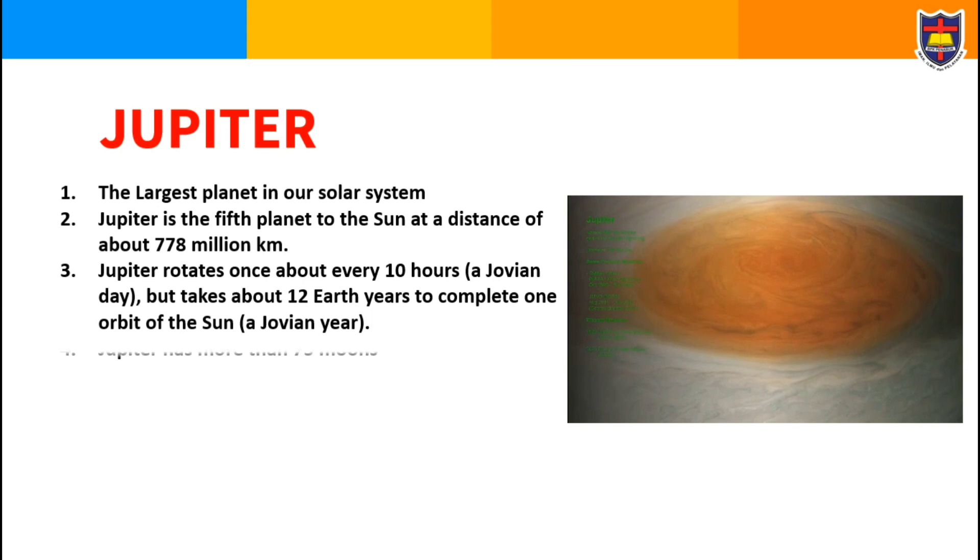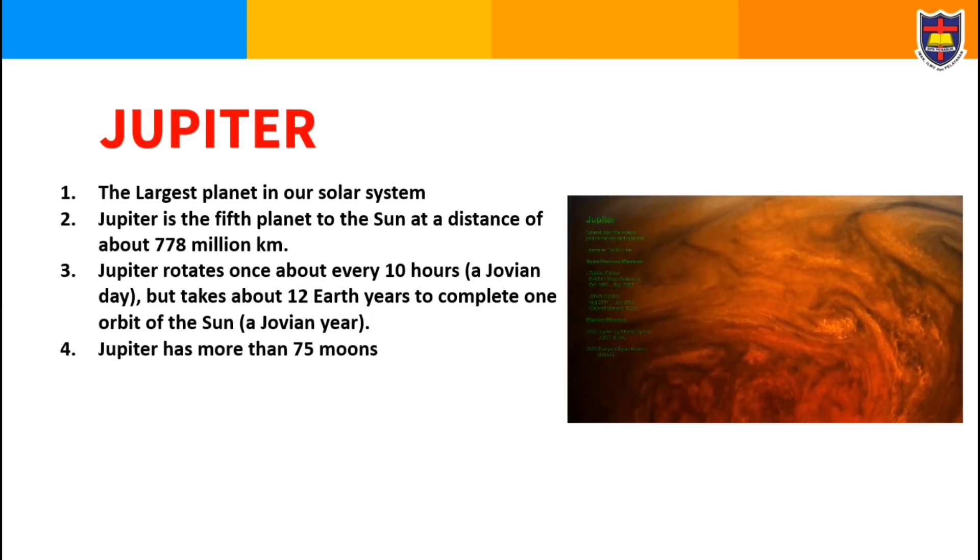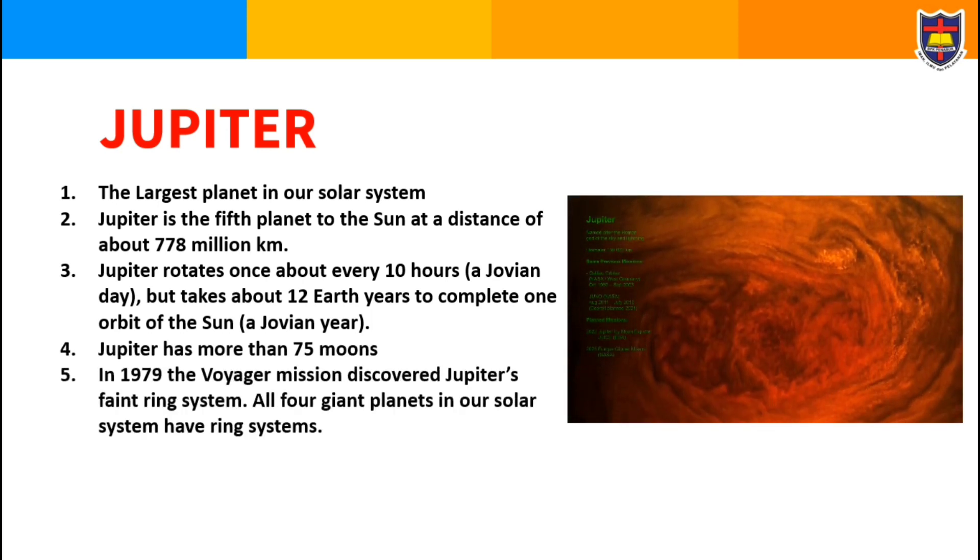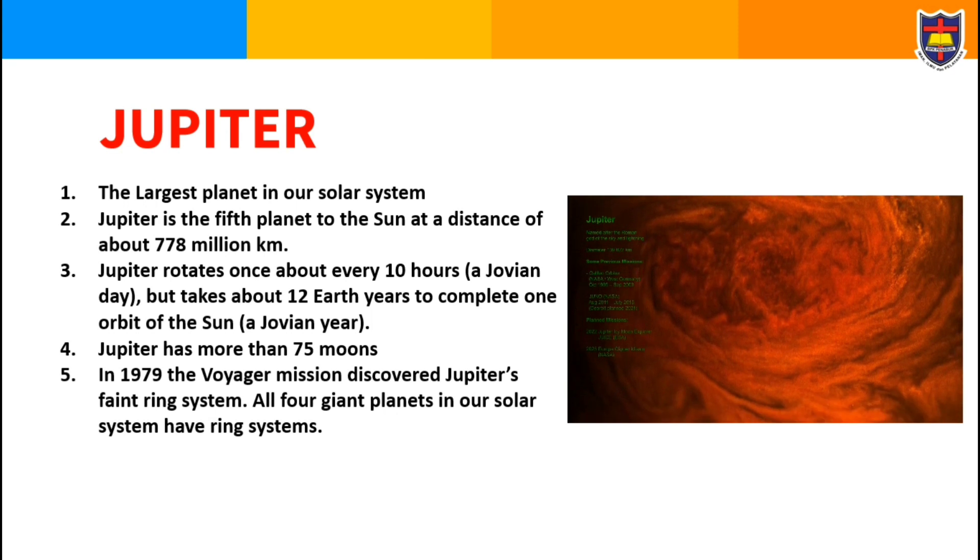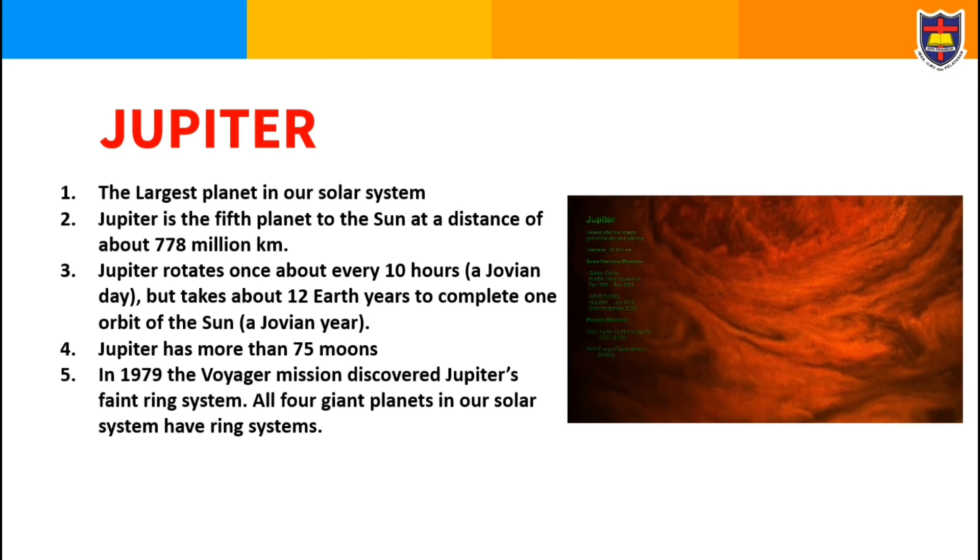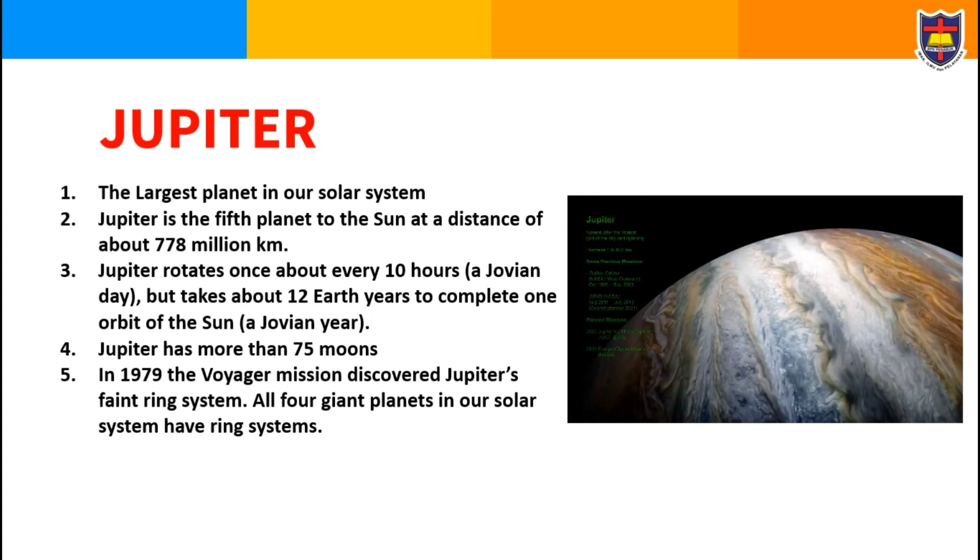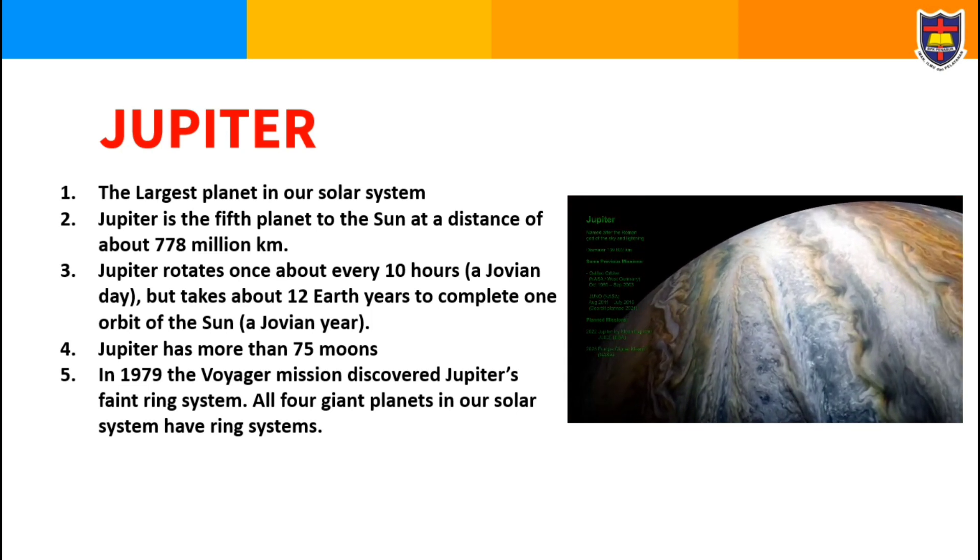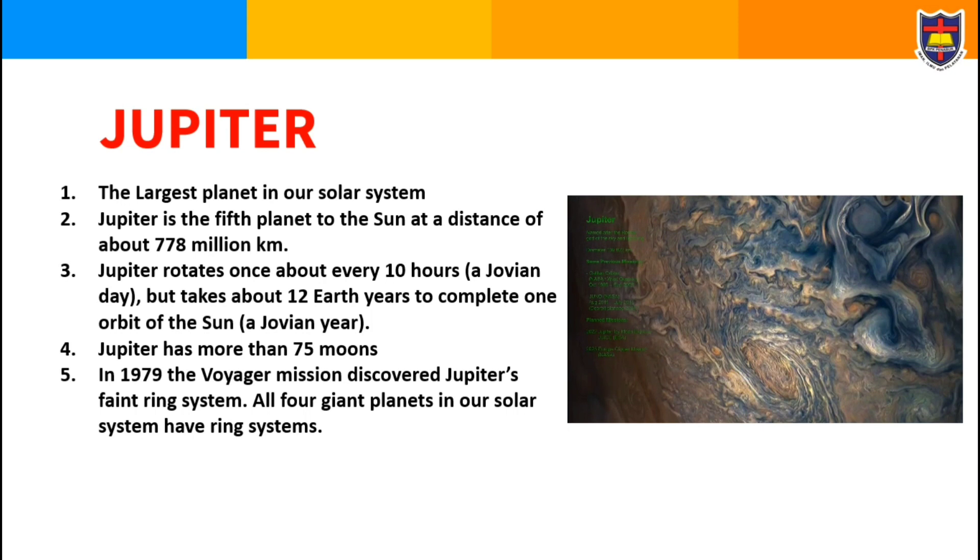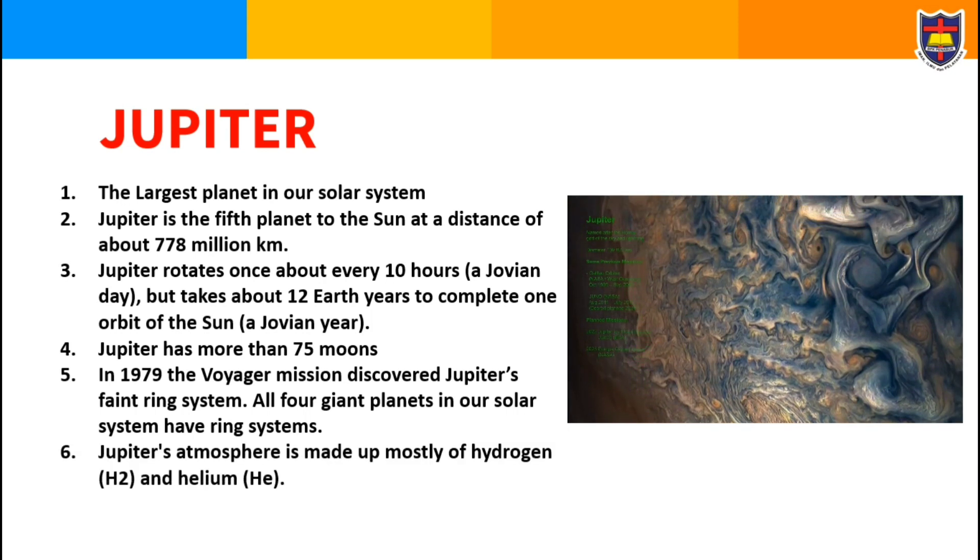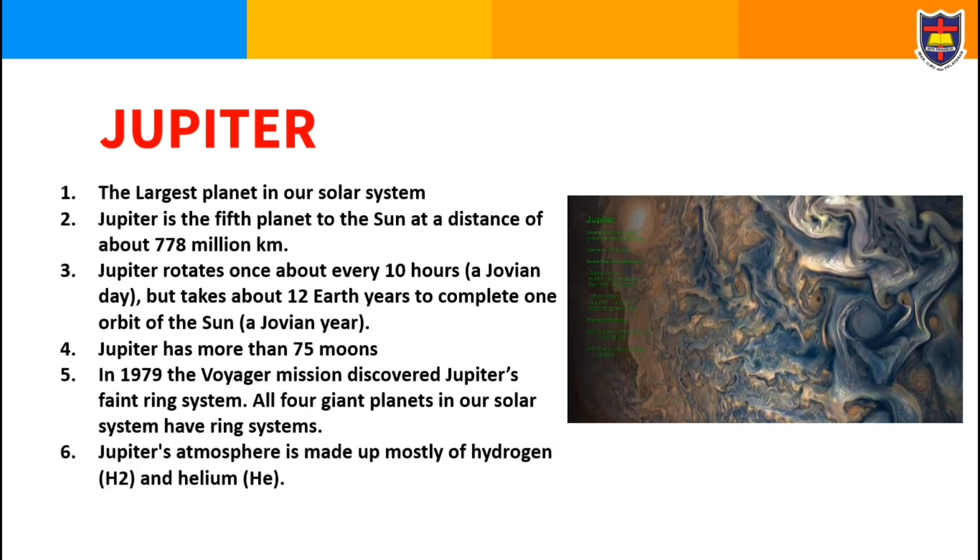Jupiter has more than 75 moons. In 1979, the Voyager mission discovered Jupiter's faint ring system. All four giant planets in our solar system have ring systems. Jupiter's atmosphere is made mostly of hydrogen and helium.